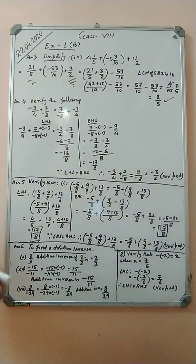4 plus 13 is 17, so LHS equals 17/8. For the RHS: minus 5/8 plus (9/8 plus 13/8). All denominators are positive. LCM is 8. 9 plus 13 is 22, giving minus 5/8 plus 22/8, which equals 17/8. LHS equals 17/8 and RHS equals 17/8, therefore LHS equals RHS and the question is verified.